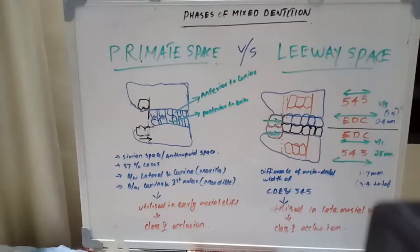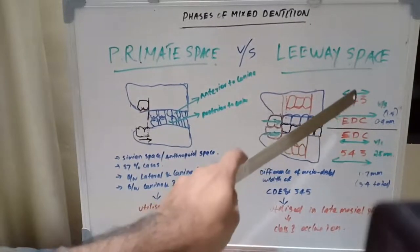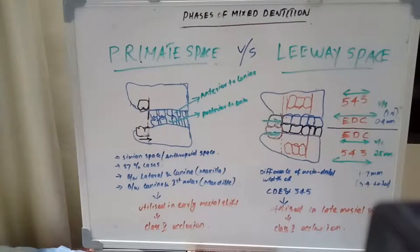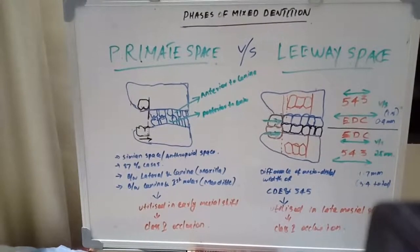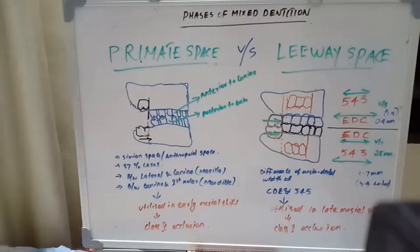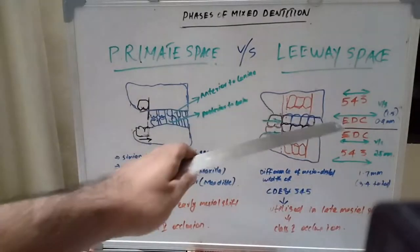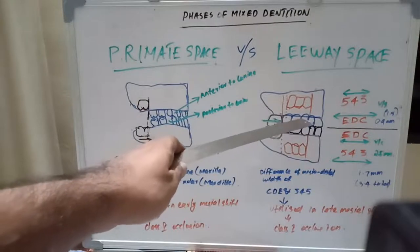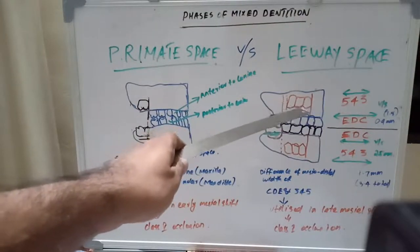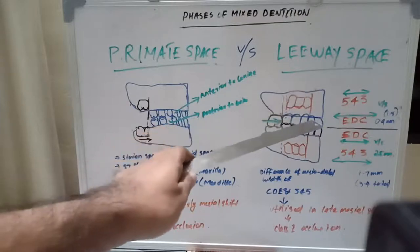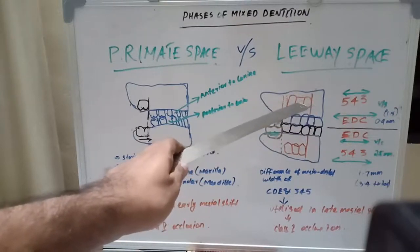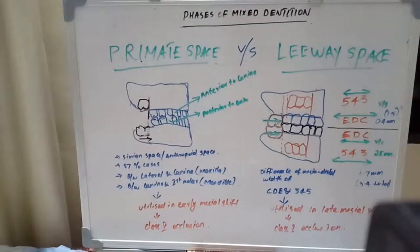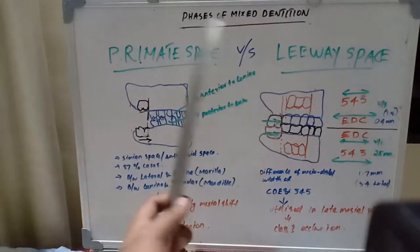Leeway space is the difference between the mesiodistal dimension — that is, the mesiodistal width — of the primary canine and primary molars (first and second) versus their successors: the permanent canine and first and second premolars. The deciduous canine is replaced by the permanent canine, and the first and second primary molars are replaced by the first and second premolars.